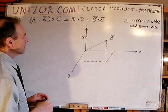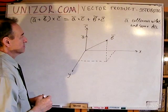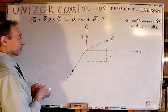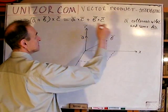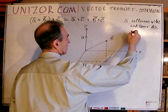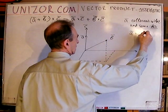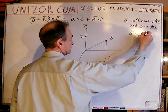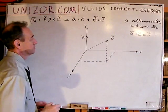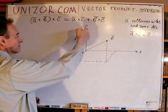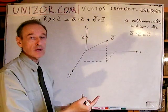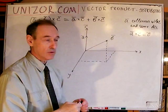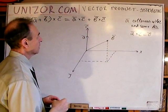What's interesting about this particular case? Well, obviously A×C is the null vector. Why? Because they're collinear — the sine of the angle between them is equal to zero. Doesn't matter what the lengths are.